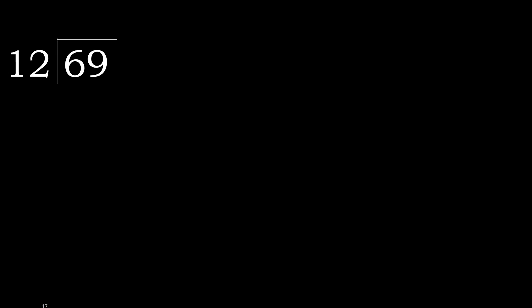69 divided by 12. 6 is less, therefore next. 69 is not less, therefore with 69. 12 multiplied by which number is nearest to 69 but not greater? 12 multiplied by 6 is 72, which is greater. Multiply by 5: 60 is not greater.